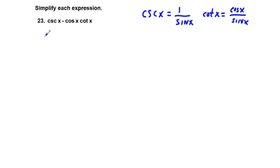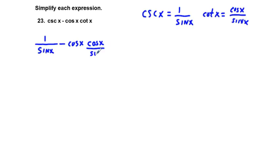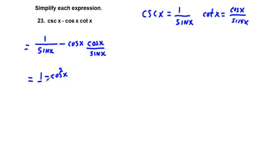We're going to replace cosecant x with 1 over sine x, and we're going to replace cotangent x with cosine x over sine x. So what we have is a common denominator for both of these terms now. And we can rewrite this as 1 minus cosine squared x over sine x — that's cosine x times cosine x over sine x.